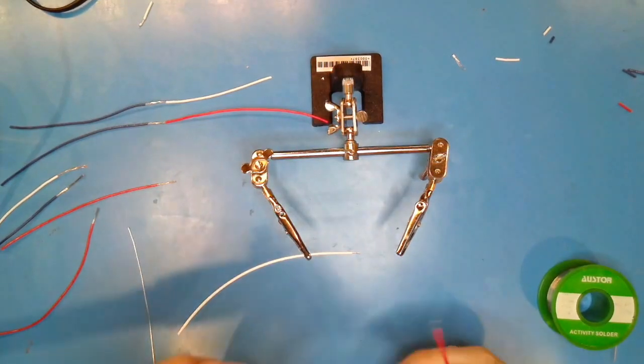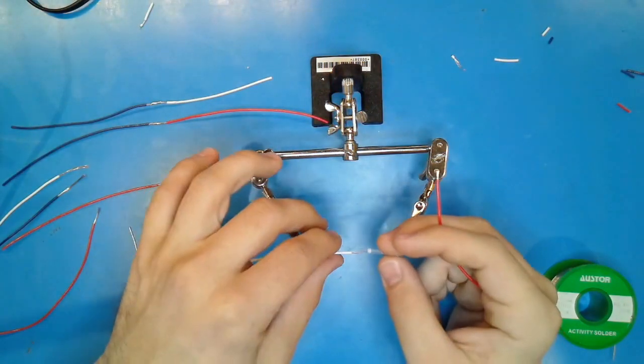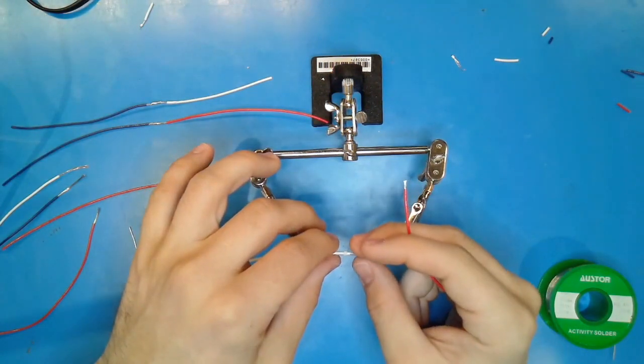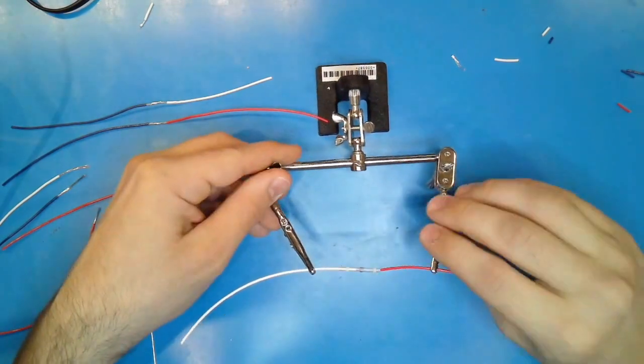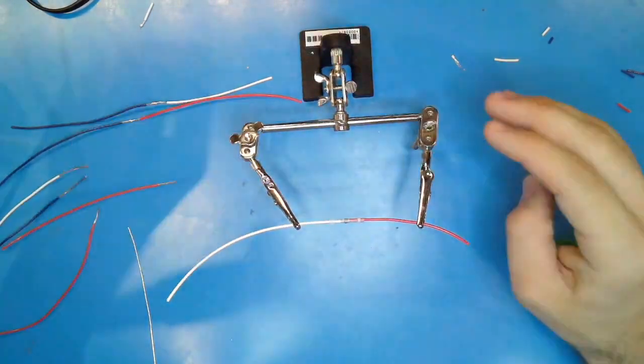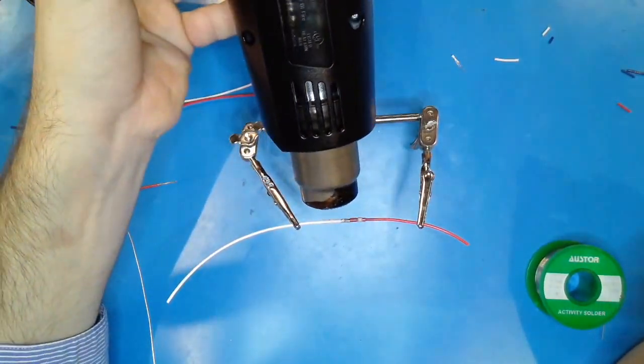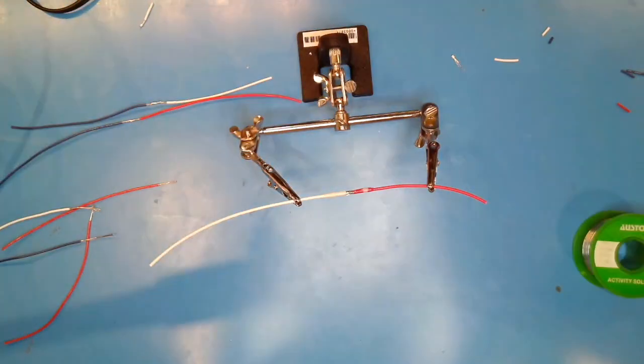Additionally, you can use what are called solder sleeves. Slide the sleeve over one wire and then insert the other wire into the sleeve. Use a heat gun to form the connection. This also waterproofs the joint.